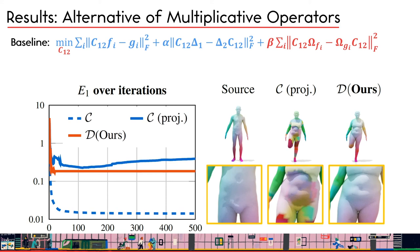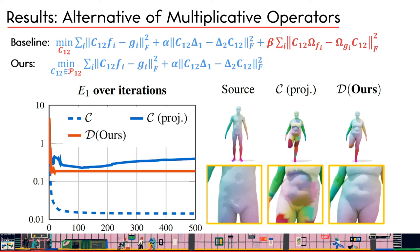For the first application, our baseline is the multiplicative operator proposed in 2017. This term is constructed from input descriptors and guides the optimization towards proper functional maps implicitly. In our setting, the proper functional map is addressed as a hard constraint, so we no longer need the multiplicative operators. We show an example on human shape pairs: our solution not only achieves lower energy values but also outputs a more accurate and smoother point-wise map.